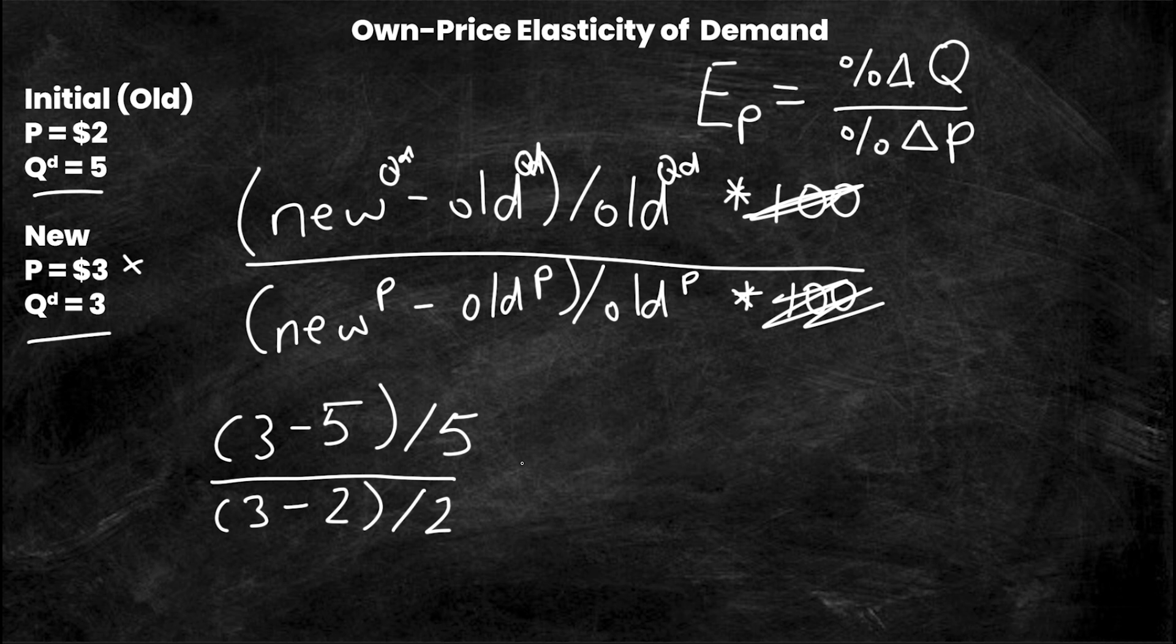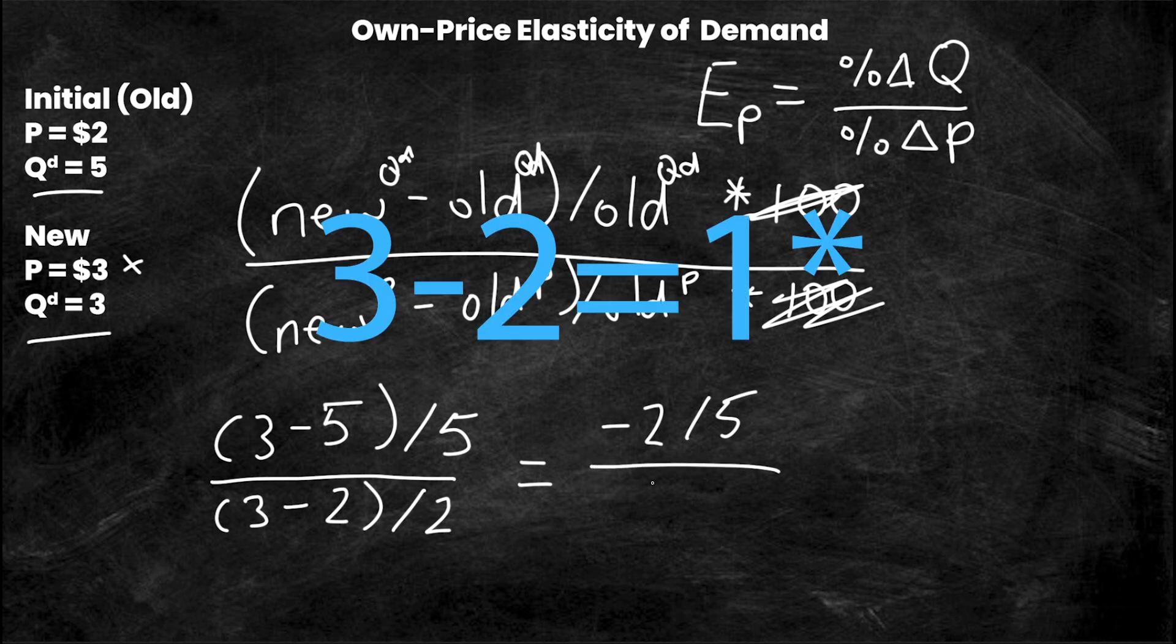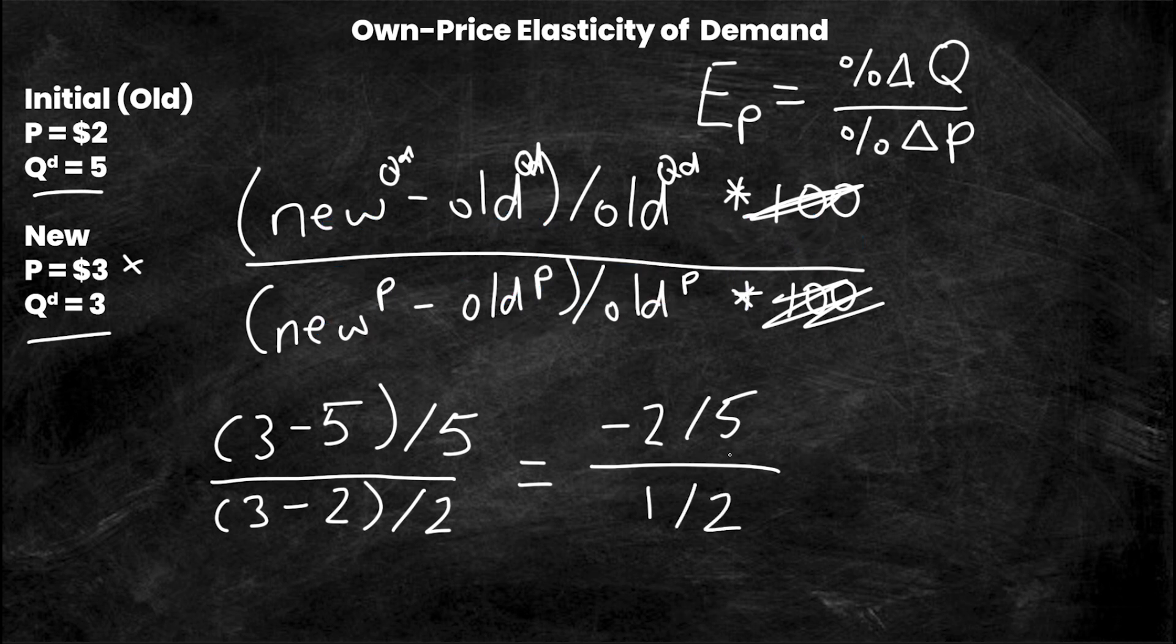Now this is a simple algebra equation that any of us could solve. So 3 minus 5 is negative 2 over 5, and all of this is 3 minus 2 is 1 over 2. So now I have the division of two fractions. The alternative is you could put this into decimals and plug it into a calculator. This top one is negative 0.4, the bottom one is 0.5.